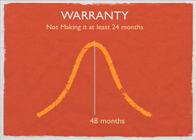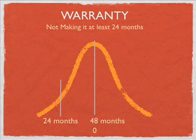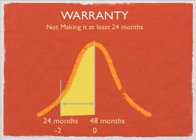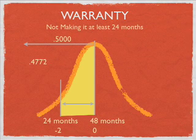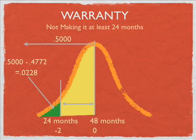Another way to look at this: place 48 months at the mean (z = 0) and 24 months as the observation (z = −2). Some tables give the area between 0 and −2 — the yellow area — which is 0.4772. Since 0.500 represents all area to the left of the mean, we compute 0.500 − 0.4772 = 0.0228, or 2.28% — the same green area.